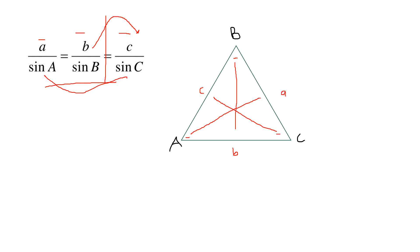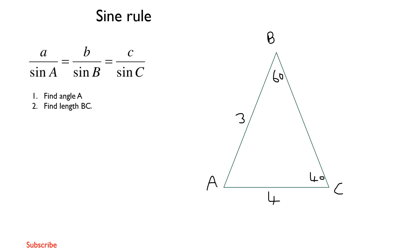Let's do a quick example to show how this looks in the exam. We are given a triangle with angle B, angle C, and two sides: AB and AC. For the Sine Rule to apply, you must have at least two angles and one side, or two sides and one angle. Both combinations allow you to apply the Sine Rule.